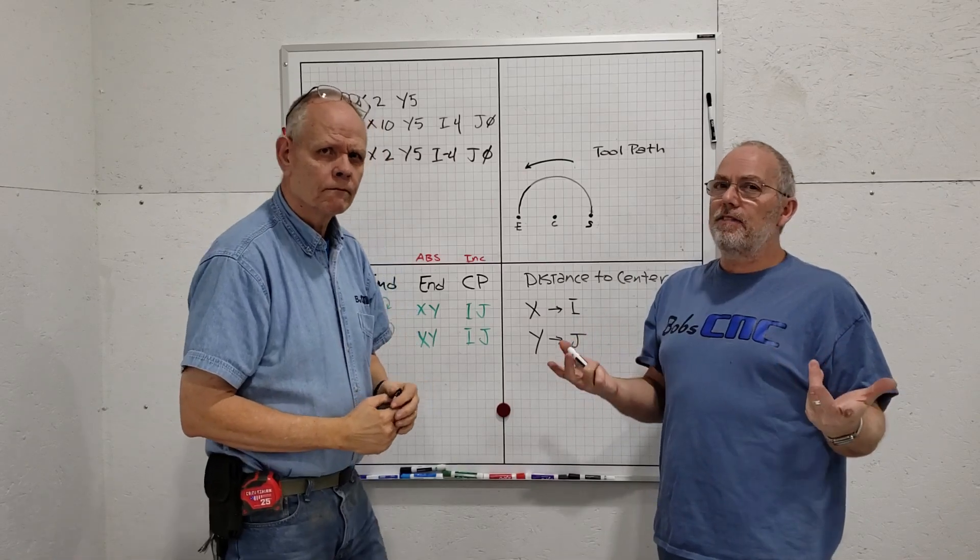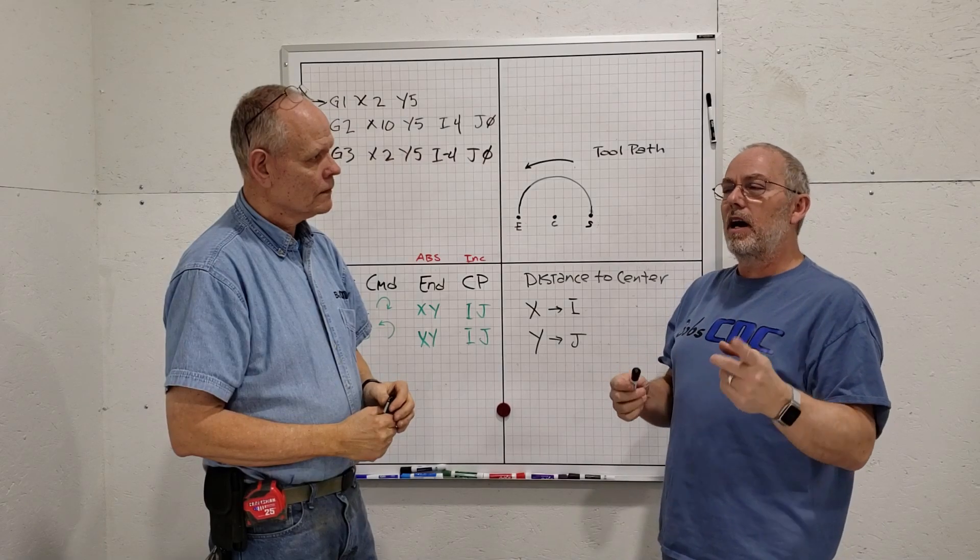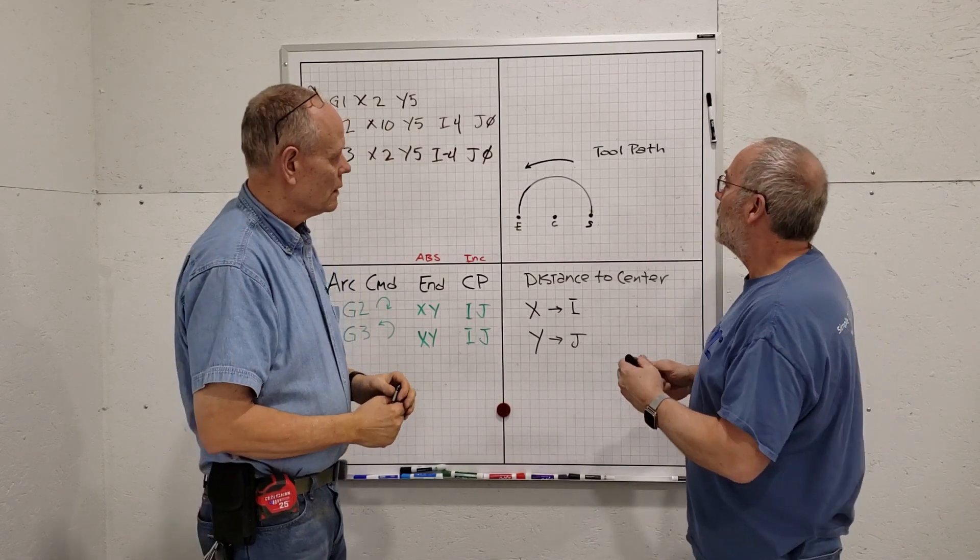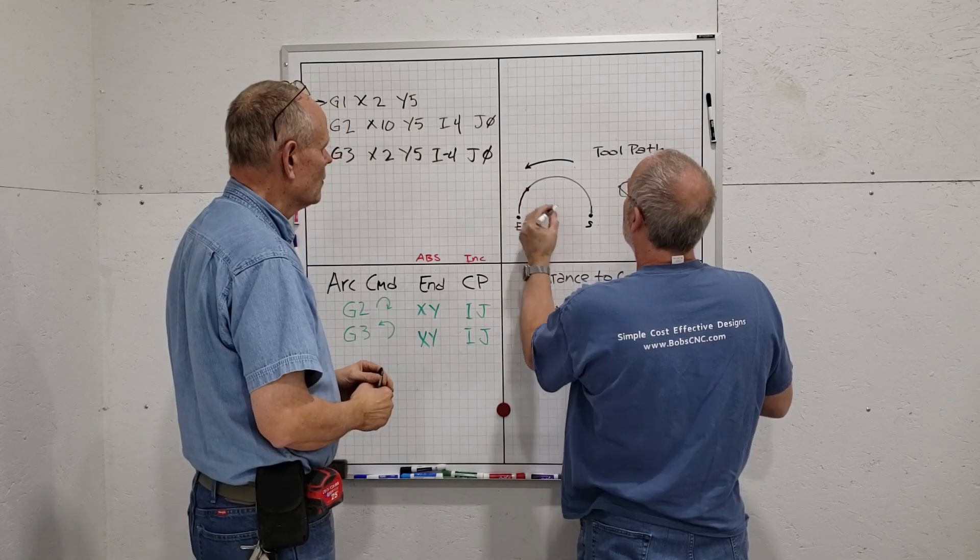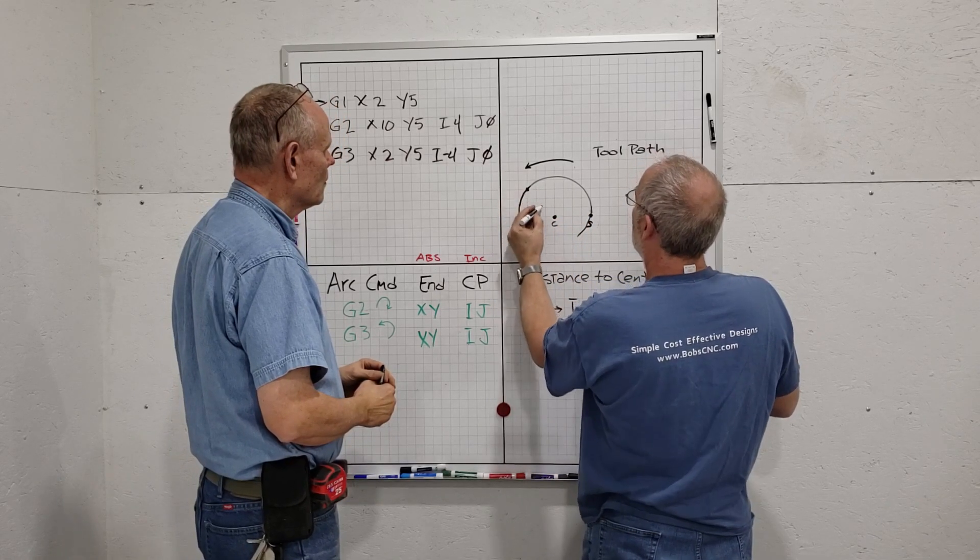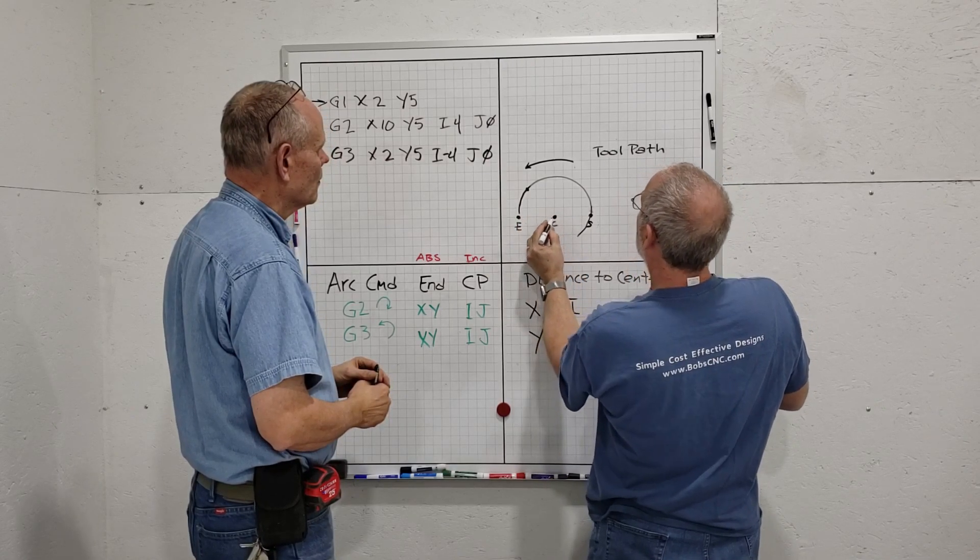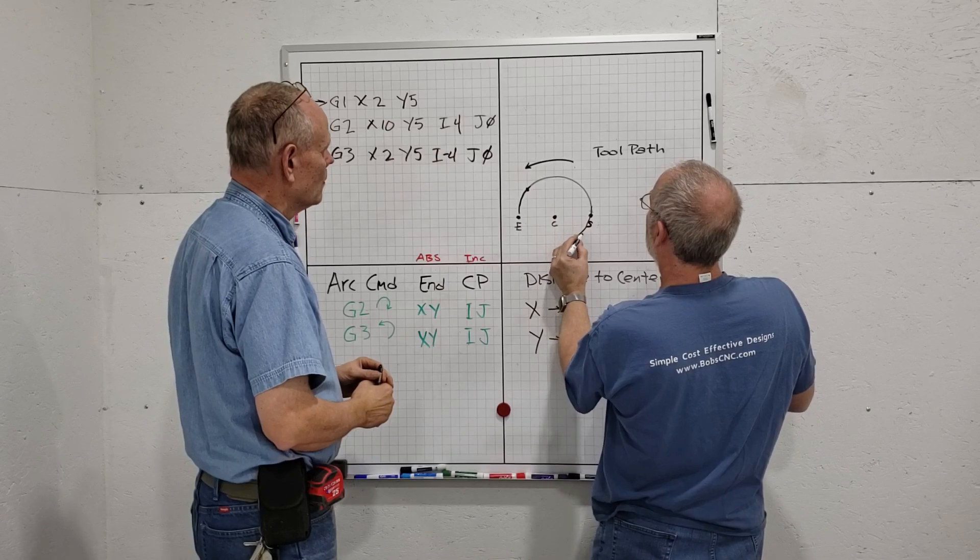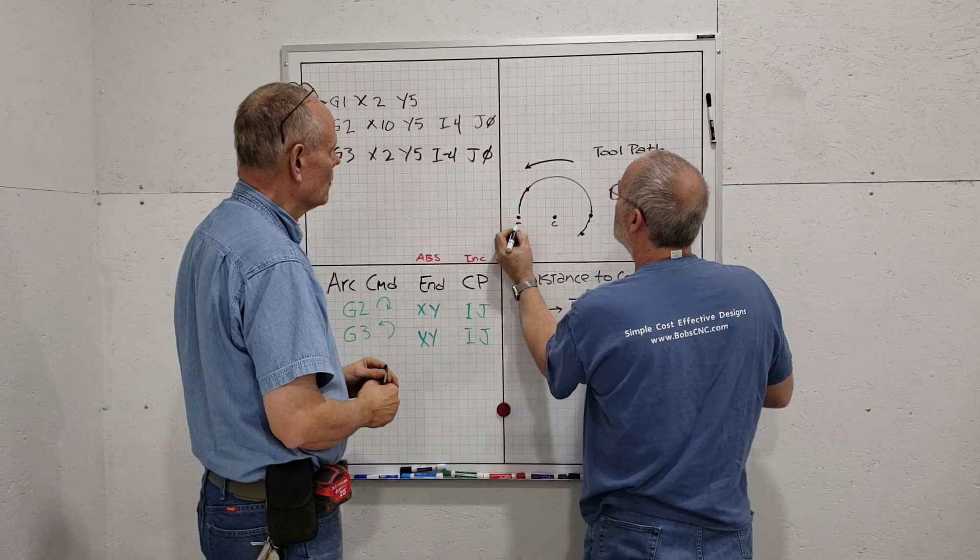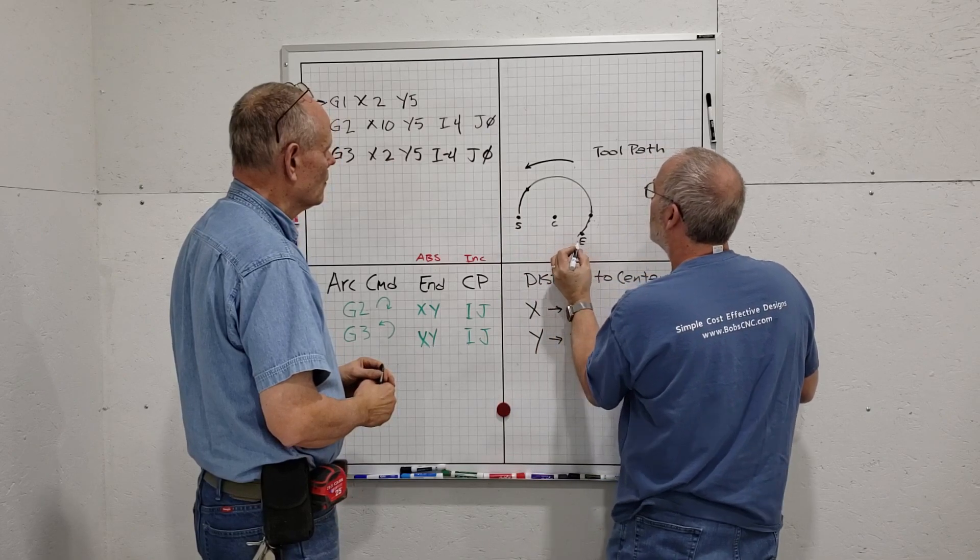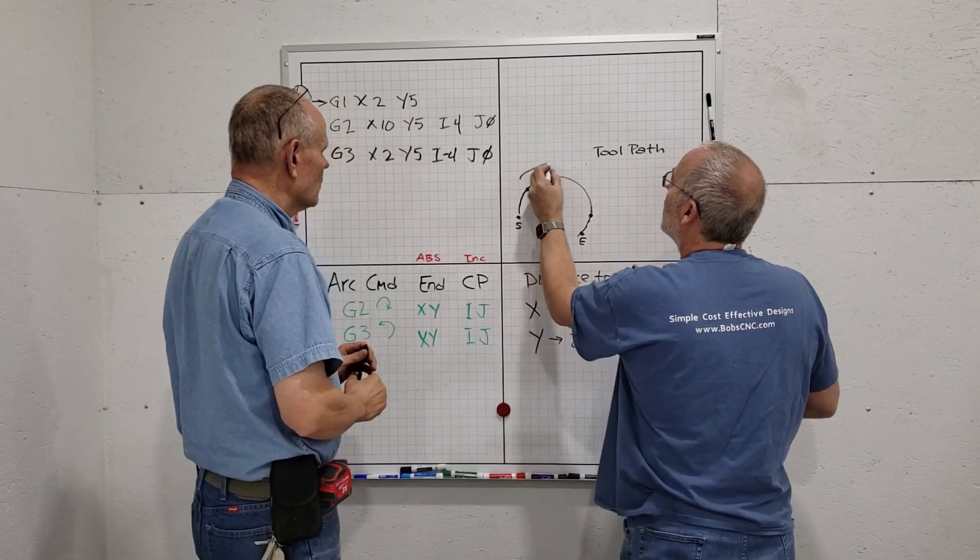That is fantastic. Those two are pretty good examples of where one of the I's or J's are zero. It could very well be that you don't have any zeros. I'll just do an example real quick of that. We're going to take this point right here and continue the arc around to the other side, which is one, two, three, one, two, three, right about here. Let's make this the start point and this the end point.